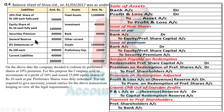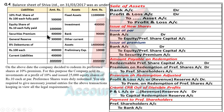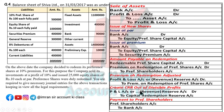In reserves and surplus, there are two items: Security Premium and General Reserve. One is divisible, one is non-divisible. Security Premium is non-divisible — do not use it for premium on redemption. General Reserve is divisible profit — use this for premium on redemption. After this, CRR (Capital Redemption Reserve) will be created, and then finally payment is made to the holder.